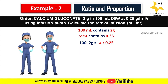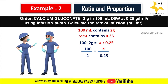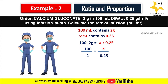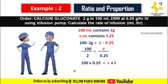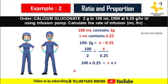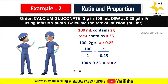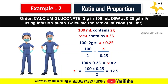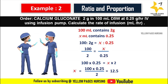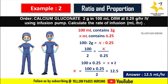Setting up the proportion: 100 is to 2 gram equals X is to 0.25. So 100 divided by 2 equals X divided by 0.25. Cross multiplying each side: 100 multiplied by 0.25 equals X multiplied by 2. Therefore X equals 100 multiplied by 0.25 divided by 2, which gives 12.5. Hence the answer is 12.5 ml per hour, and we set 12.5 ml per hour in the infusion pump.